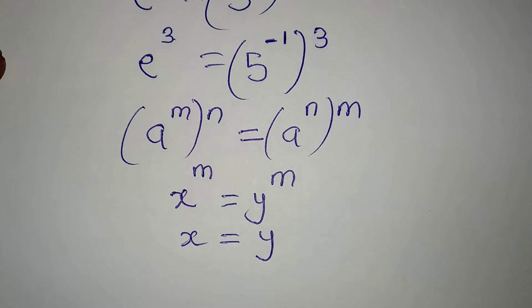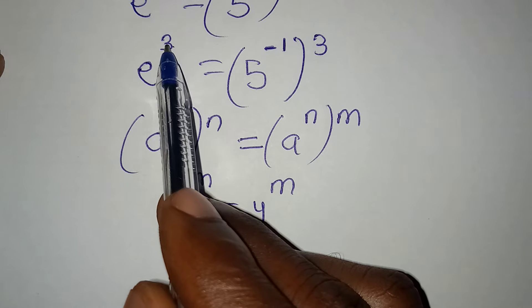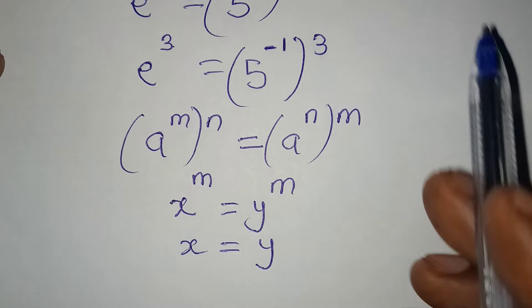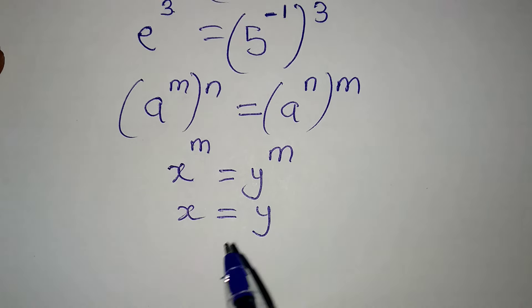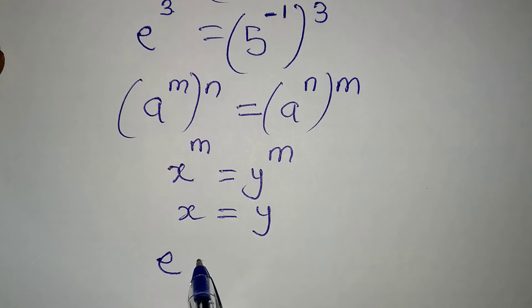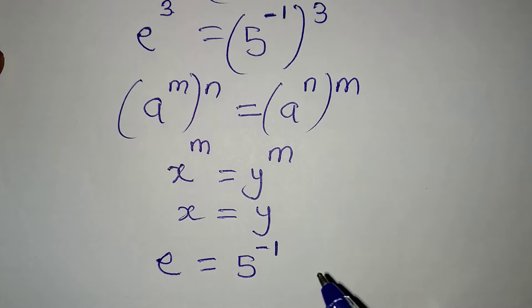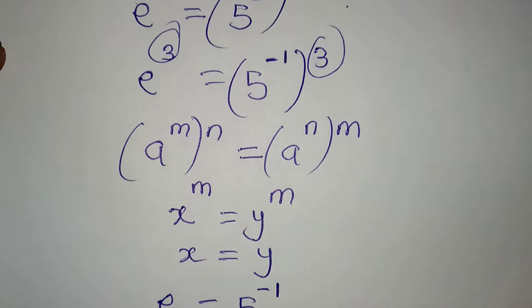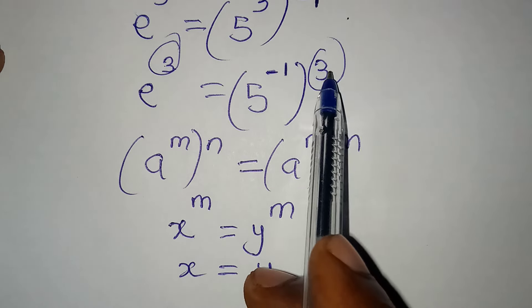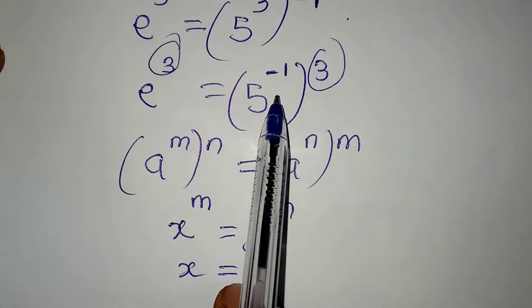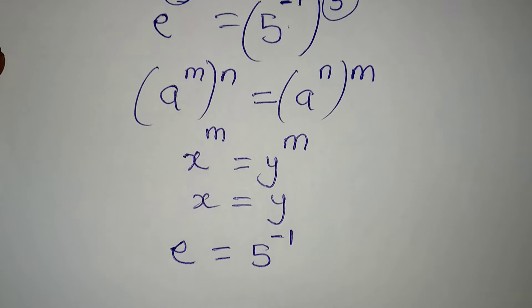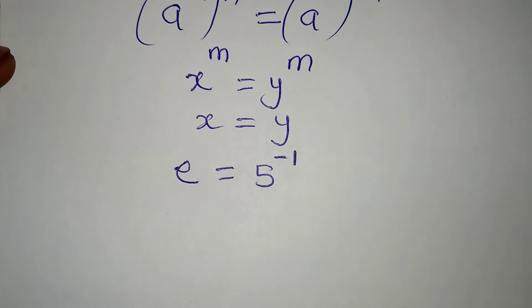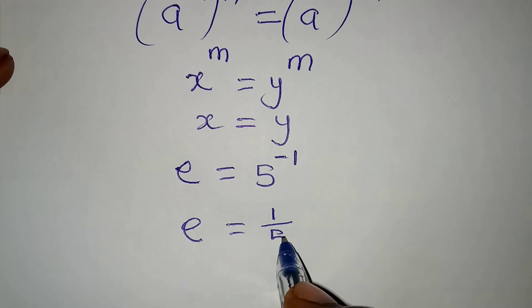And now, because of that, since I have power of 3 here and I have power of 3 here, I can conclude that e is equal to 5 to the power of negative 1, which should be equal to 1 over 5.